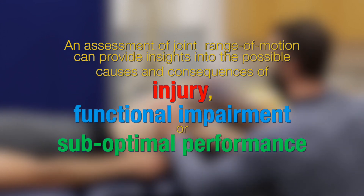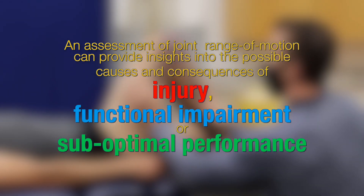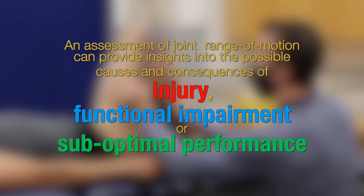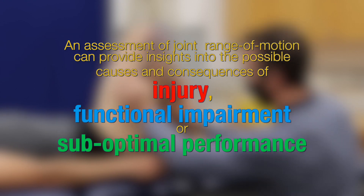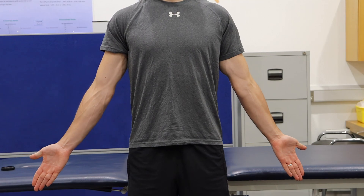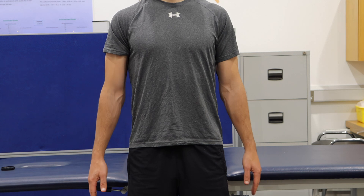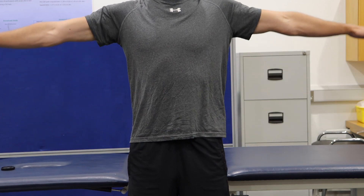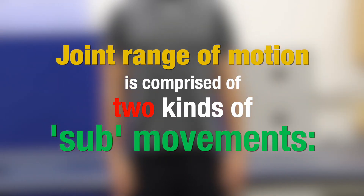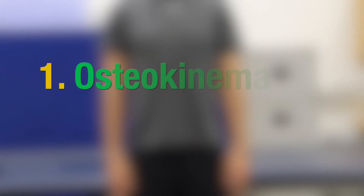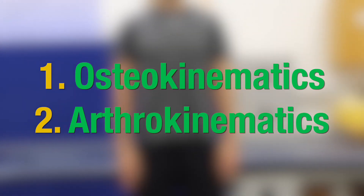Range of motion availability is one potentially important part of the patient examination because it defines the constraints within which the clinician must work. It helps the clinician to identify abnormalities or aberrancies that may increase the risk of injury, prevent recovery or undermine function. Range of motion — the motion that occurs at your shoulder, hip, or ribs during movement — is comprised of two kinds of sub-movements: osteokinematic movements and arthrokinematic movements.